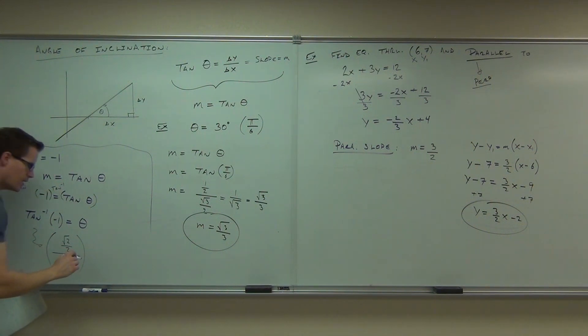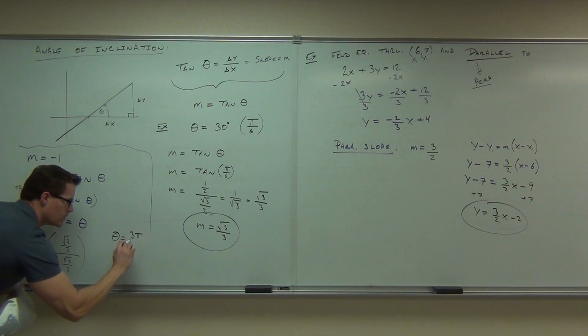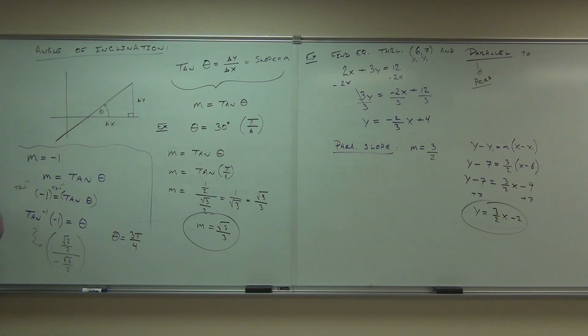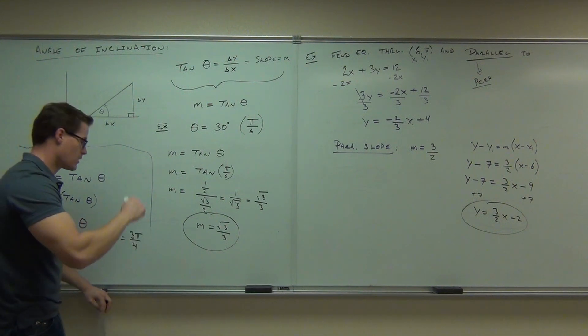We got that negative 1, so we know that this happened when theta was equal to 3 pi over 4. Or if you want to translate that, that's 135 degrees.